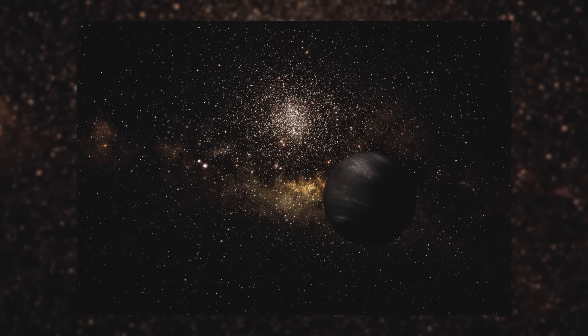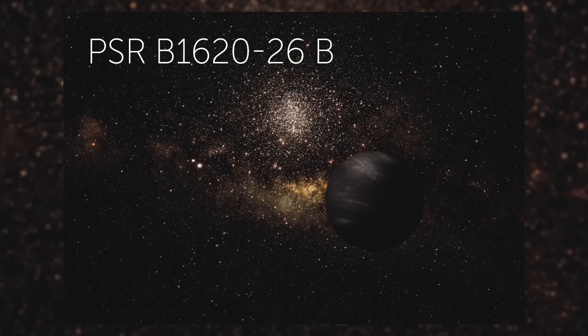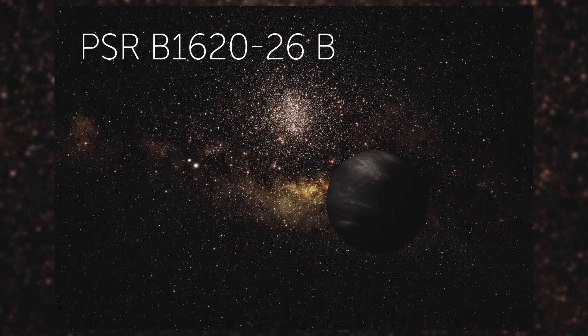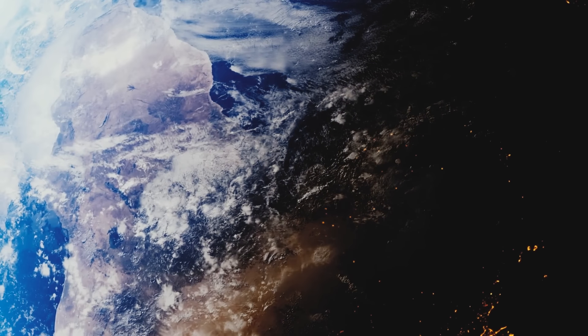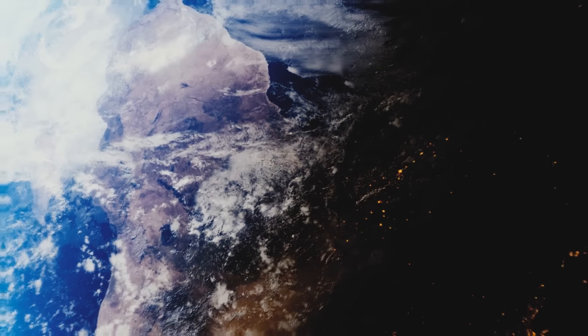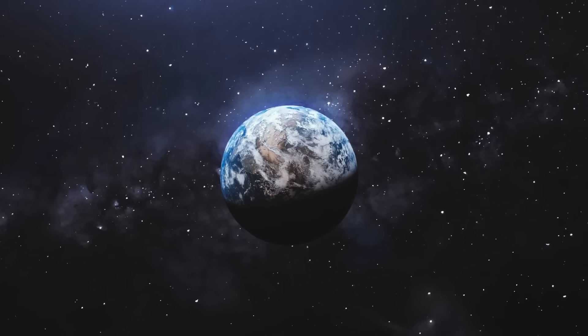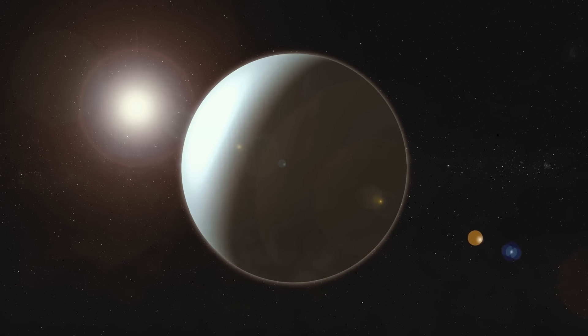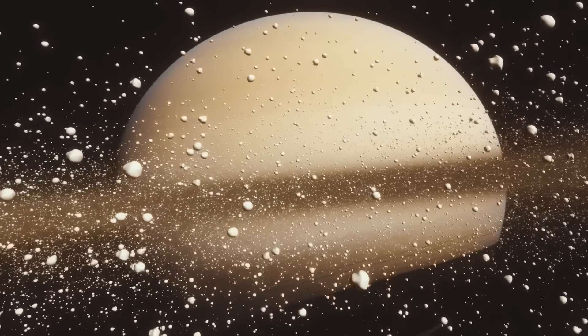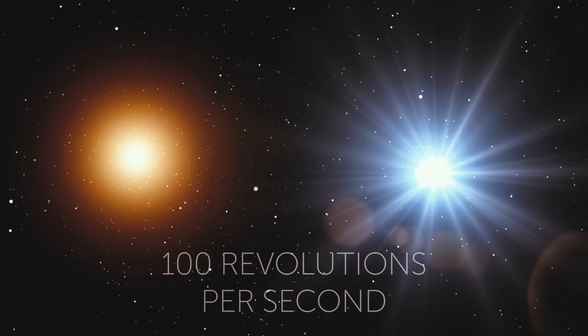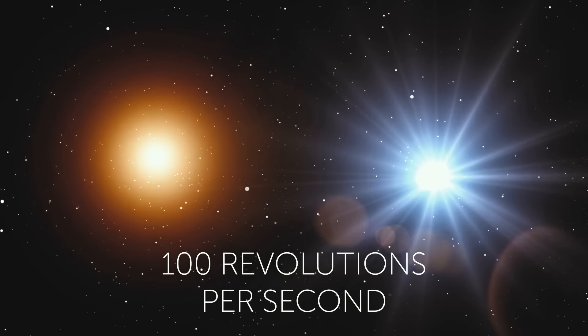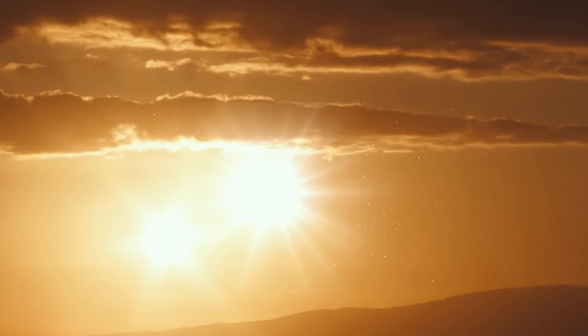One of the oldest exoplanets we know about is PCR B162026b. It's about 12.7 billion years old. It's almost three times as old as Earth, which appeared 4.5 billion years ago. This also means that the Genesis planet formed only about 1 billion years after the Big Bang. The planet is so old that its two parent stars have had enough time to evolve into a white dwarf and a pulsar, making almost 100 revolutions per second. Sunrises on this planet must look awesome!